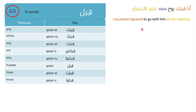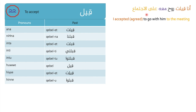Our first example: 'Ana iblit' — I accepted — 'rooh' (to go), 'ma'o' (with him), 'ala al-ajtema'' (to the meeting). So: I accepted to go with him to the meeting.